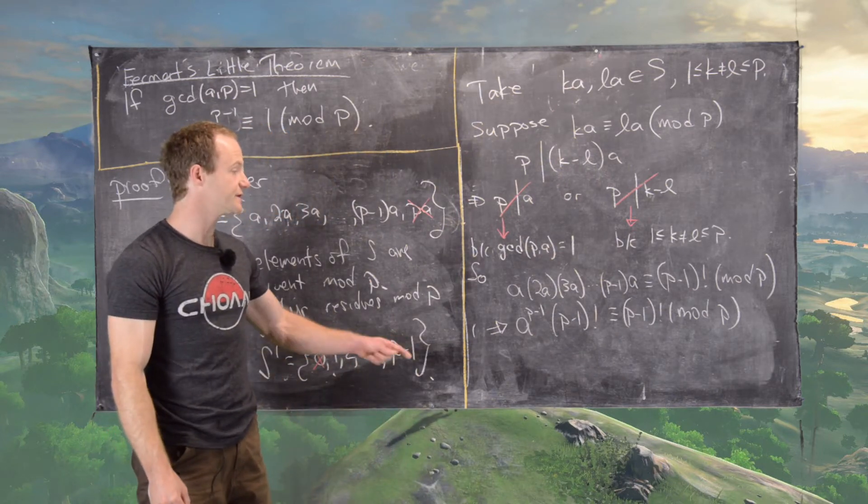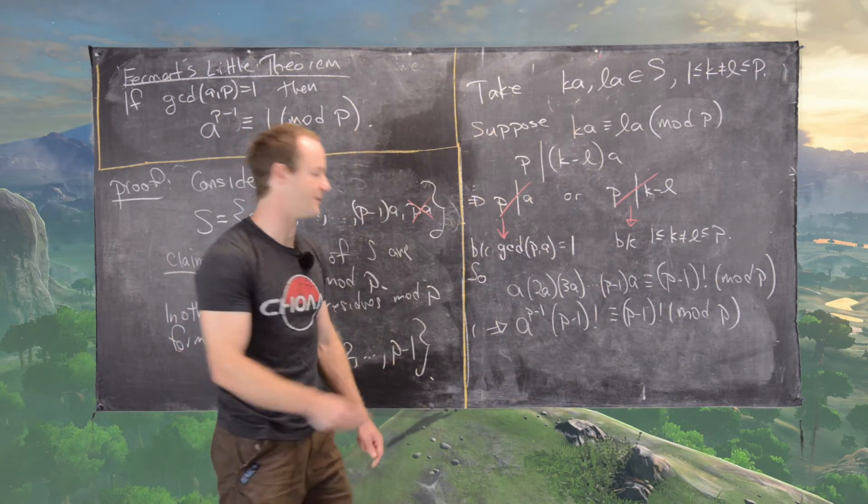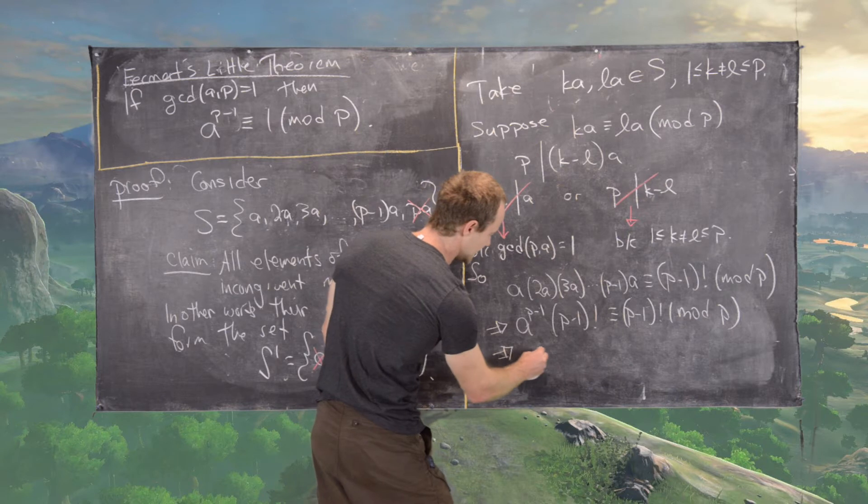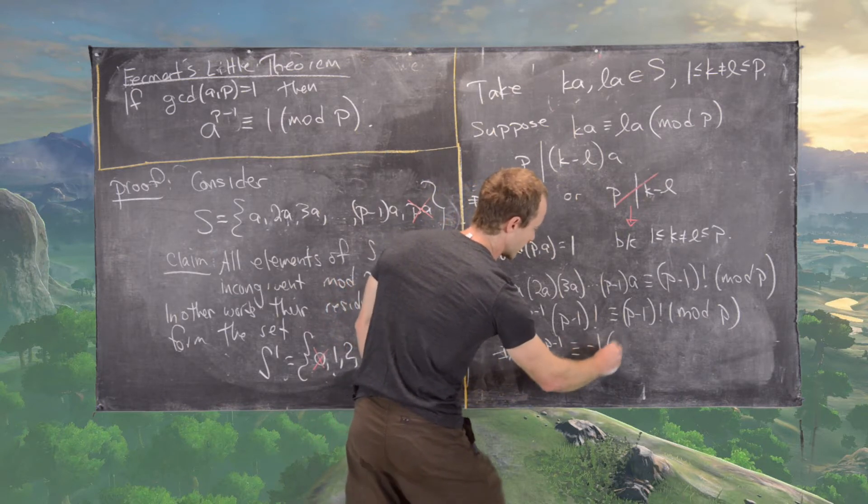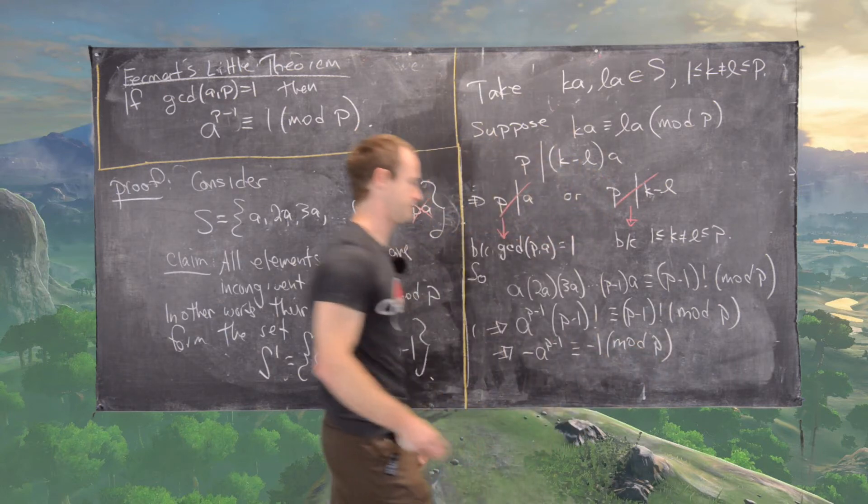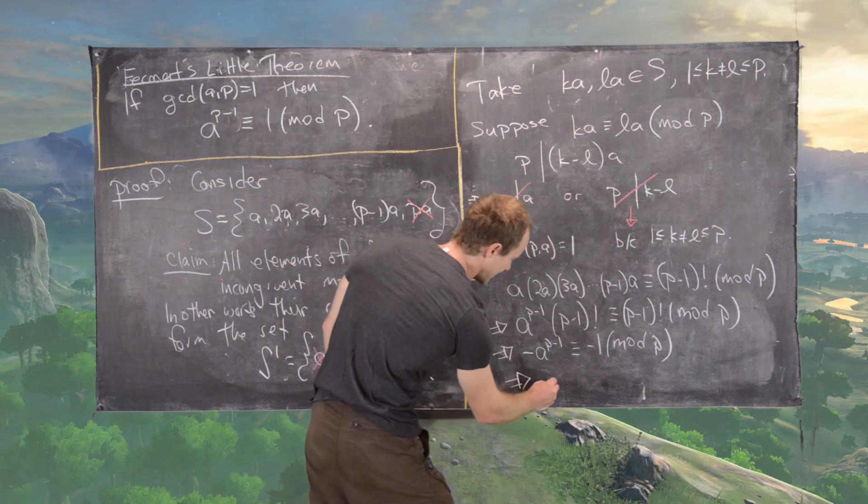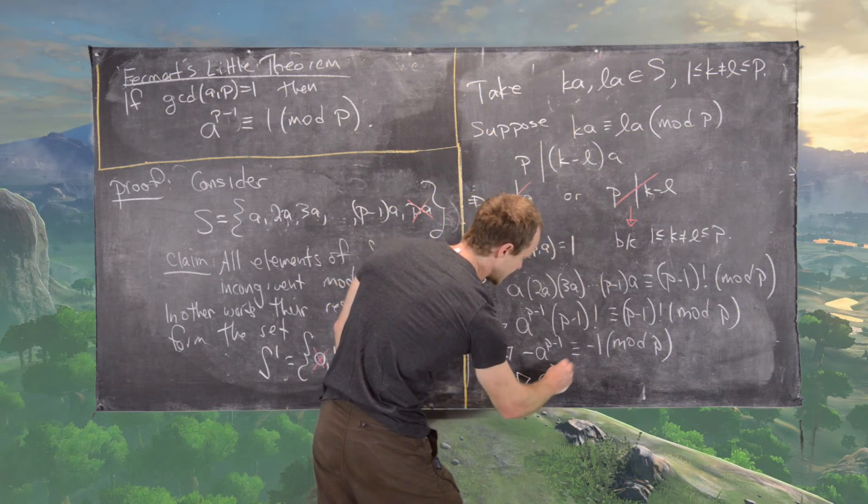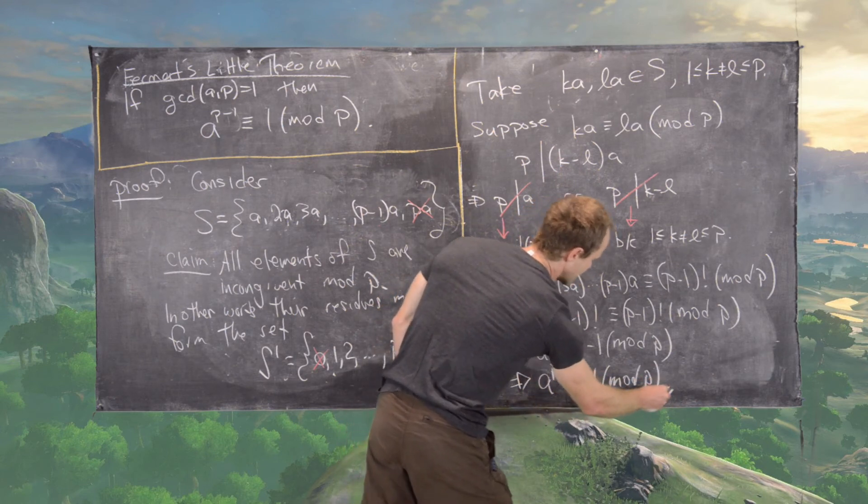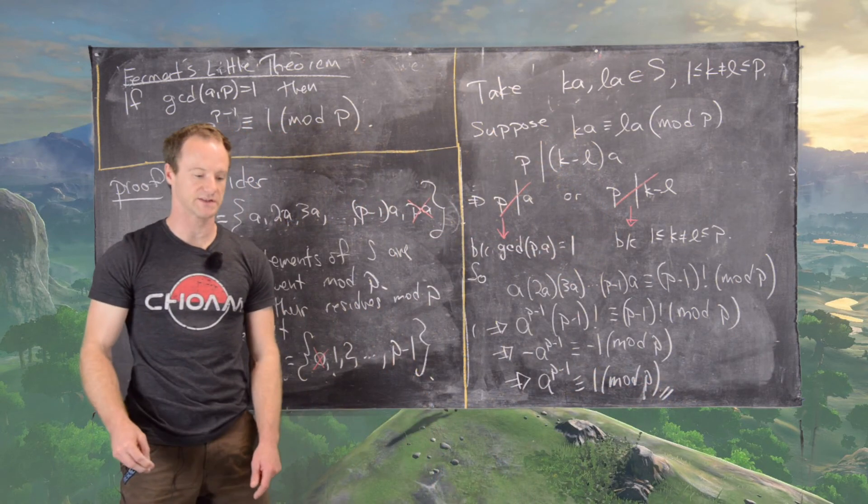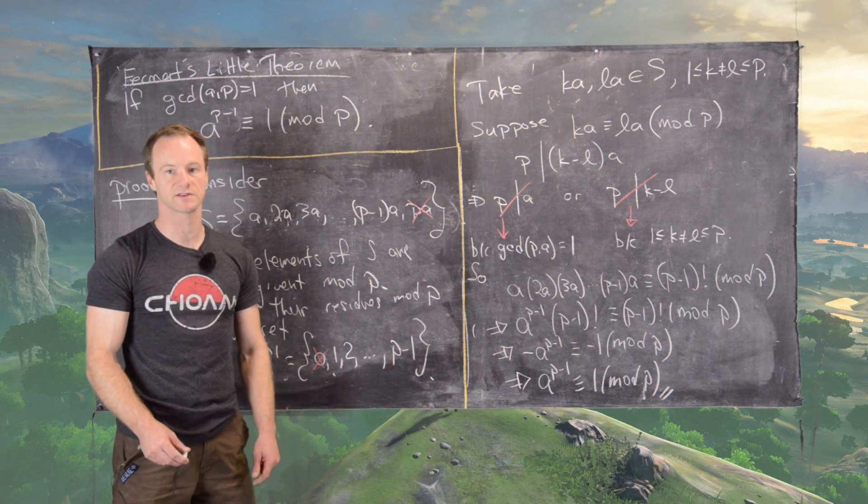And now we can use Wilson's theorem to rewrite P minus 1 factorial on each side by negative 1. So that tells us that negative A to the P minus 1 is congruent to negative 1 mod P. And finally, we can cancel the negatives from both sides and that'll give us A to the P minus 1 is congruent to 1 mod P. And that finishes the proof of Fermat's little theorem. So I'll have some other videos where we do some examples of applications of Fermat's little theorem.